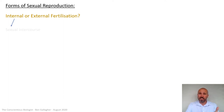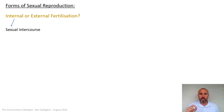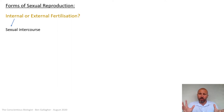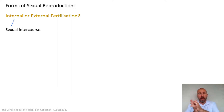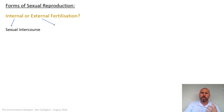If it's internal fertilization — things like sexual intercourse, as humans do — the sperm are released inside the female, so they're safe, they're protected, and hopefully one will reach the egg, fertilize it, and it grows inside the woman. But there are lots of other examples.